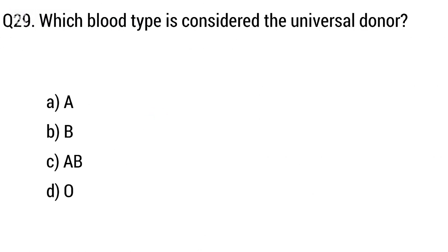Question 29. Which blood type is considered the universal donor? The right answer is option D: O.